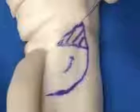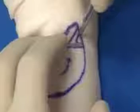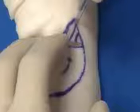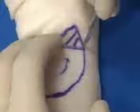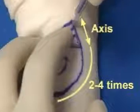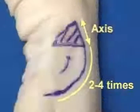The rotation flap is utilized to close a triangular defect. It follows a smooth curve from the site of the defect and then gets rotated into place. Typically, the limb of the rotation is approximately two to four times longer than the axis of the defect that it needs to close.